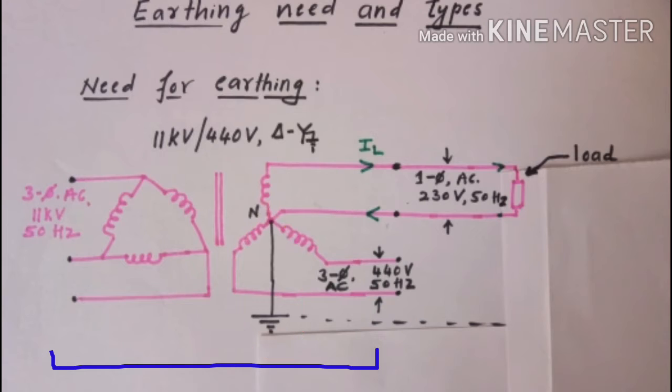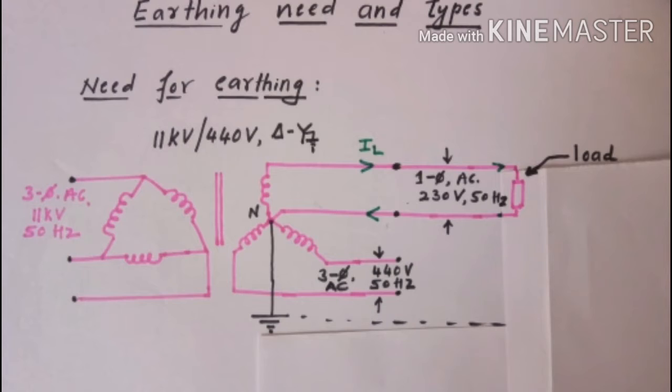To this supply system, a single-phase load is connected whose body casing is not earthed. In such a load, if insulation fails, the live part of the load may come in contact with the casing of the load and an operating personnel may come in contact with such load casing.